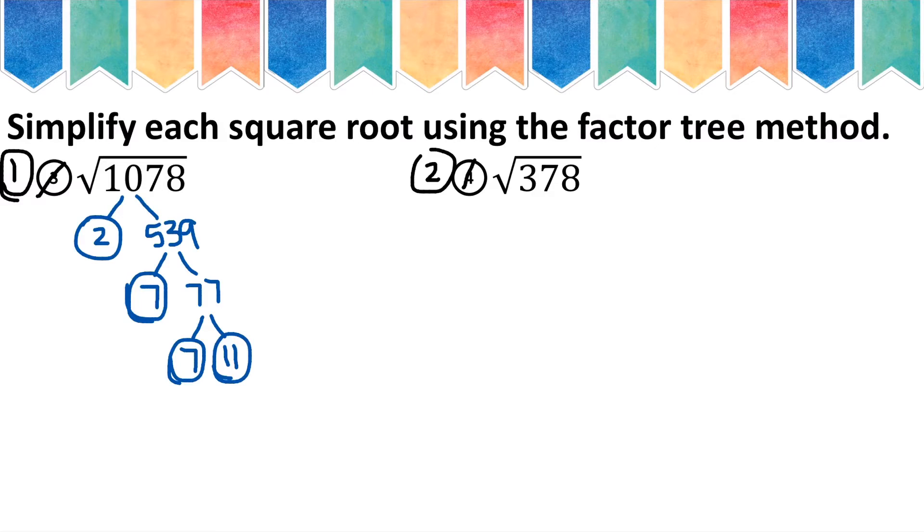So remember, I take my prime numbers, 2, 7, 7, and 11, and that's how I write my new radical. So I will do 2 times 7 times 7 times 11. And I'm looking for two numbers that are the same, 7 and 7. Those two numbers get crossed out and brought to the front.